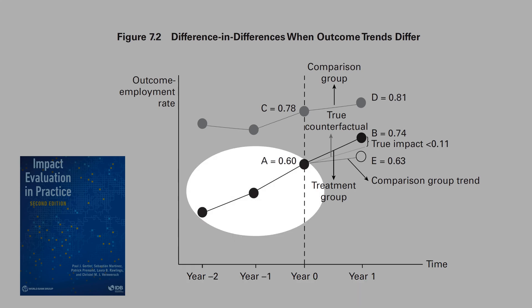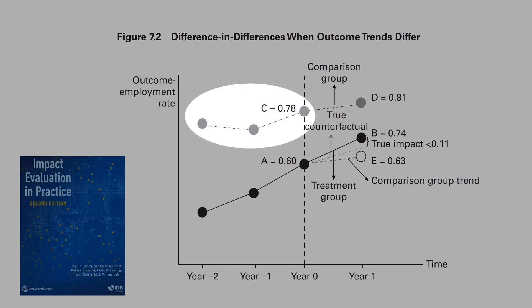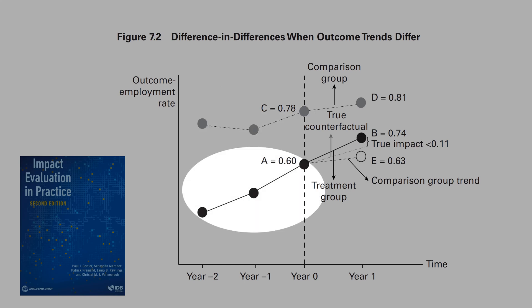We can allow the treatment and the control group to have different time trends. We have to understand that diff-and-diff is not an experiment. Therefore, diff-and-diff relies on the assumption that you have a reasonable control group for the treatment group.